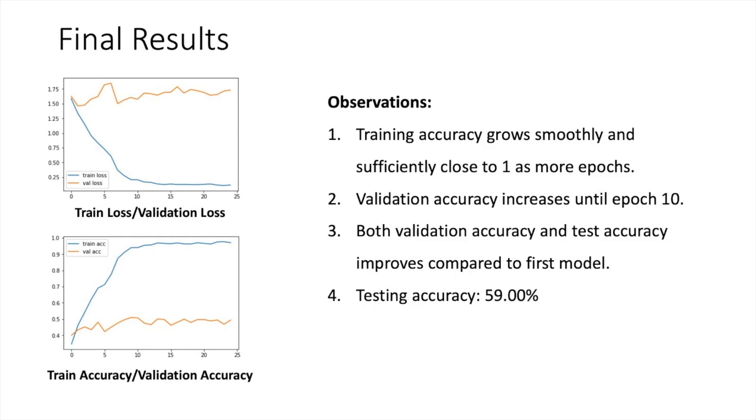We have a couple of conclusions to our model. Here are some important points that we want to re-mention again. The first important progress is our data preprocessing method, including data cleaning, content-aware cropping, data normalization, and data augmentation. And the second is that we have applied ResNet, transfer learning, L2 regularization to our model. And the result is that we have 59 percent testing accuracy. That's all for our presentation. Thanks for watching.